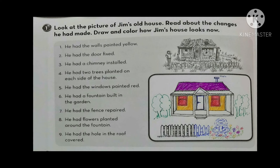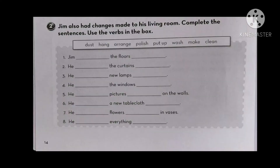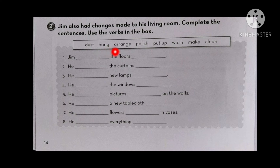I want all of you to draw these changes as we did in today's class. Now let's move to exercise number two. James also had changes made to his living room — complete the sentences using the verbs in the box. Let's read the verbs: we have dust, hang, arrange, polish, put up, wash, make, clean.